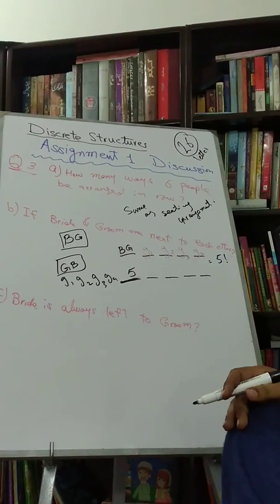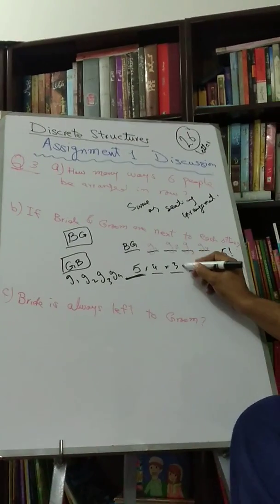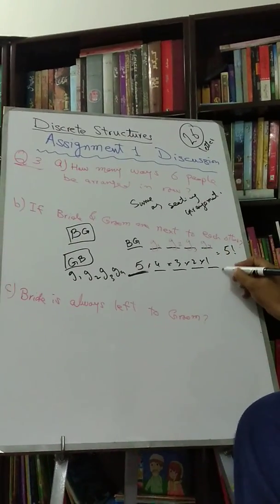So we have five choices. For the next we have four choices. For the next three, for the next two, next one.